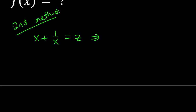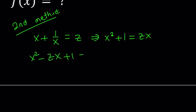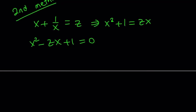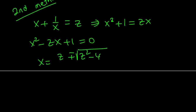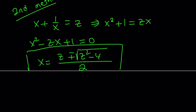From here, multiply both sides by x: x squared plus 1 equals zx, then put everything on the same side and you'll get a quadratic equation. By using the quadratic formula, we can easily solve this: negative b plus or minus the square root of b squared minus 4ac over 2a, where a is 1. That is the x value in terms of z.